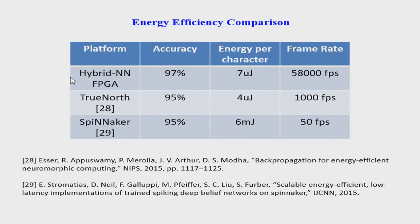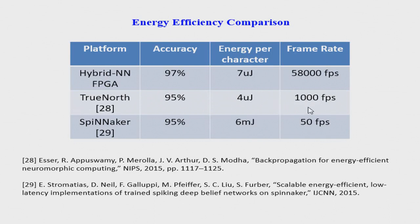Comparing energy and speed with TrueNorth and SpiNNaker: accuracy is similar, with our system slightly better. Energy per character is comparable to TrueNorth and significantly lower than SpiNNaker — noting that SpiNNaker clocks everything at one millisecond, which must be taken into account. For equivalent frame rate, our 20-microsecond delay corresponds to 58,000 frames per second. TrueNorth reports 1,000 frames per second, while SpiNNaker, clocked at one millisecond, could not go beyond 50 frames per second for this processing.